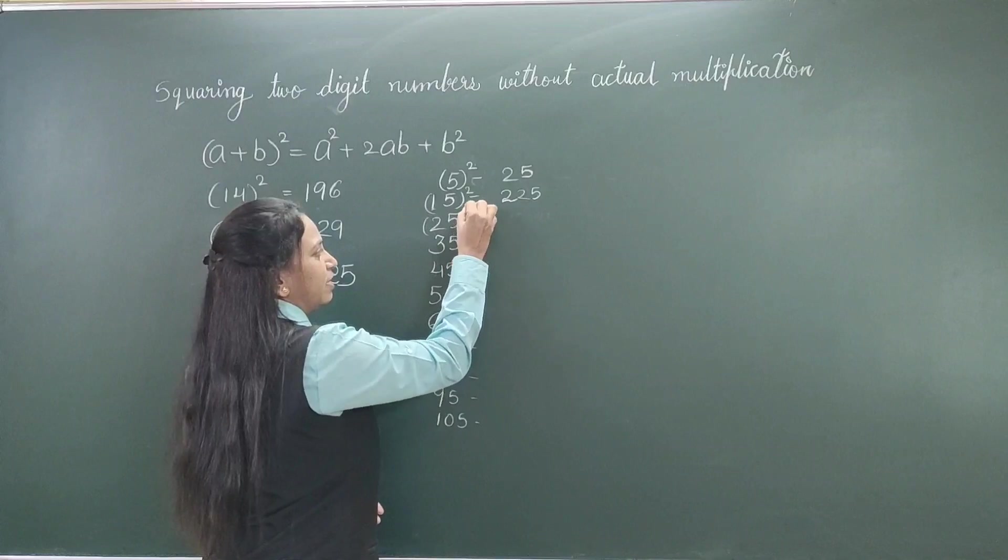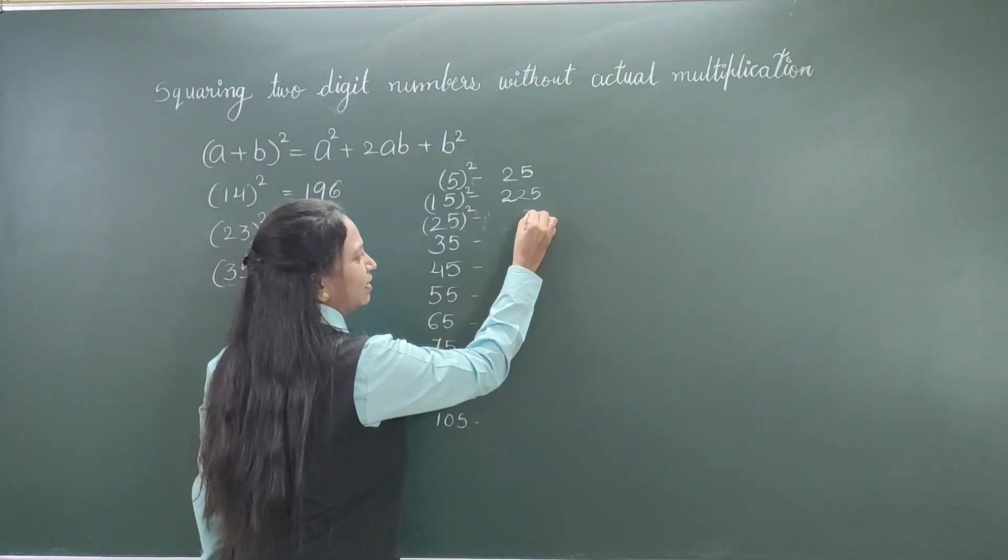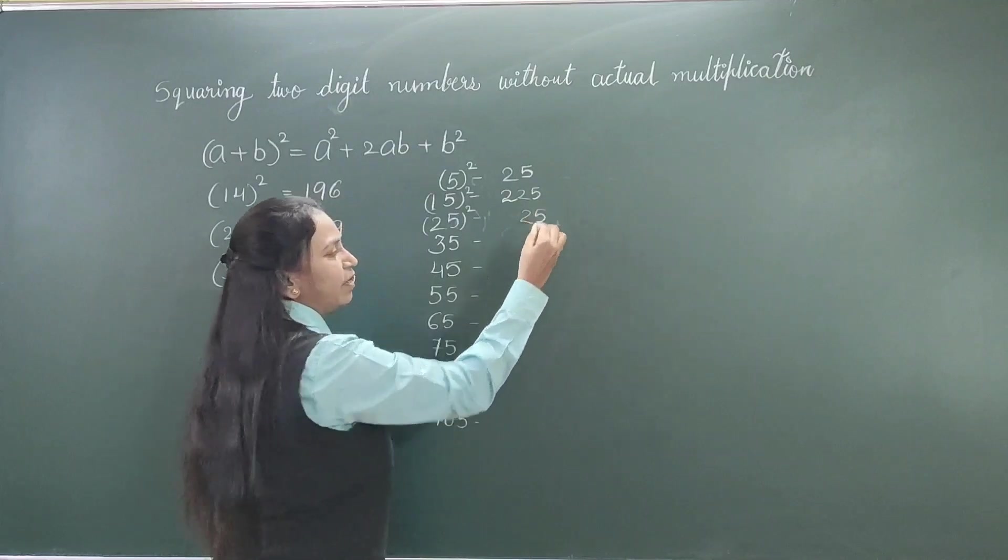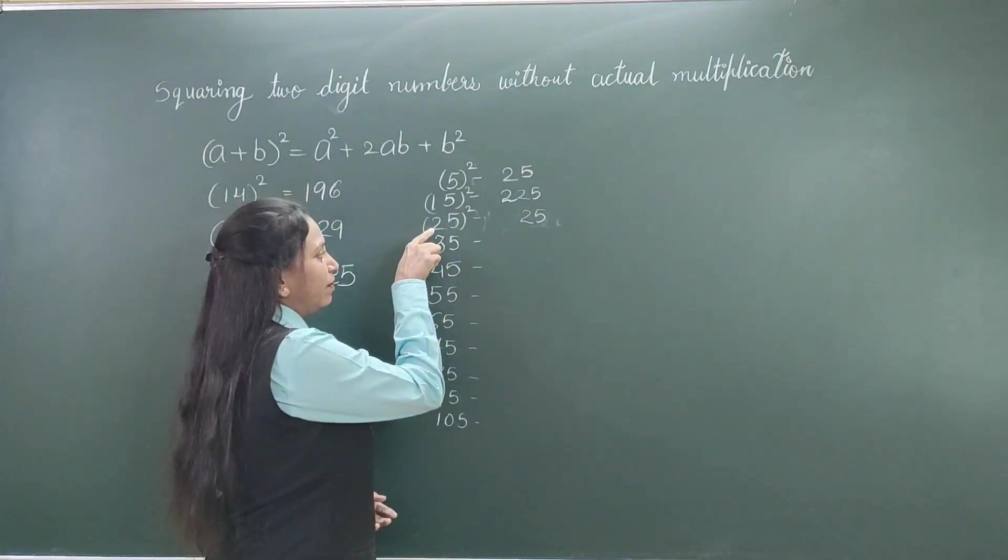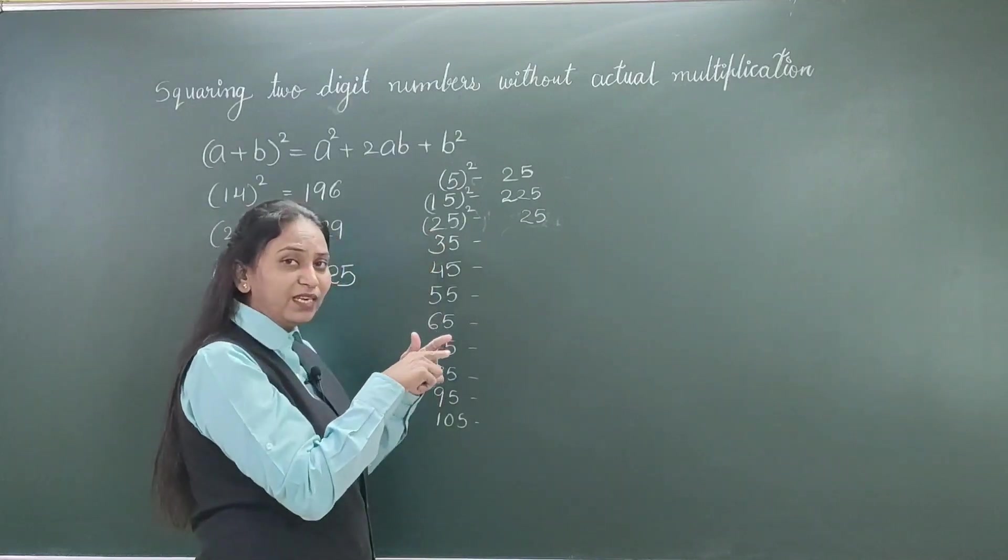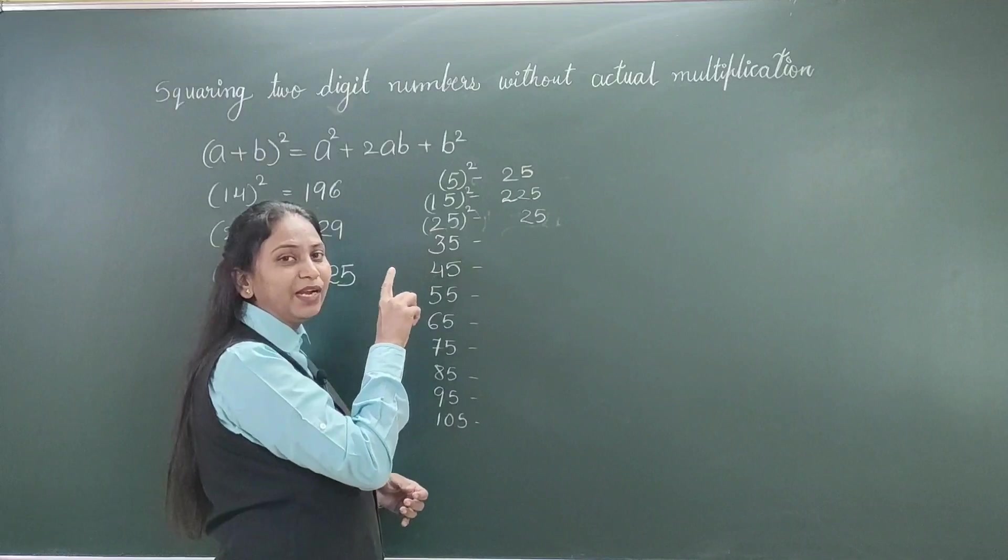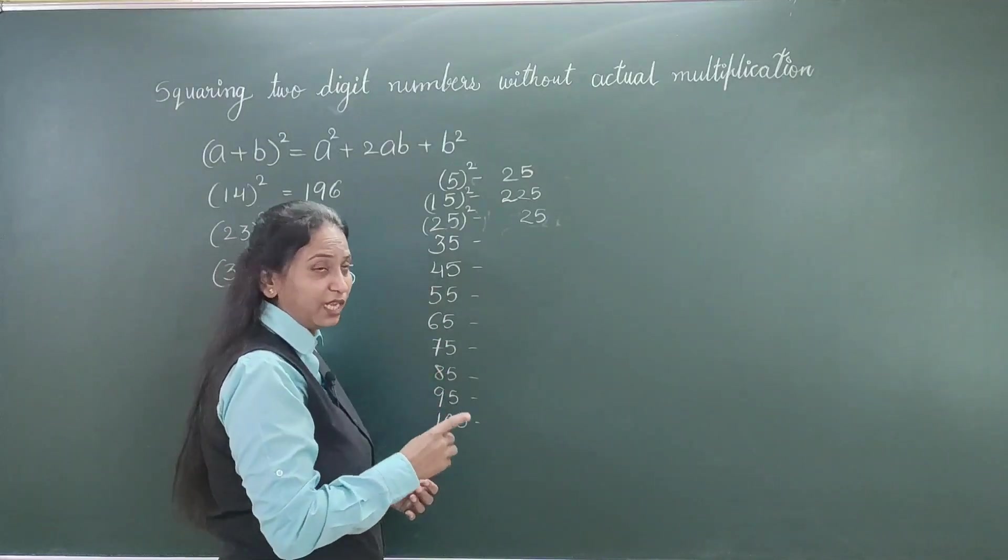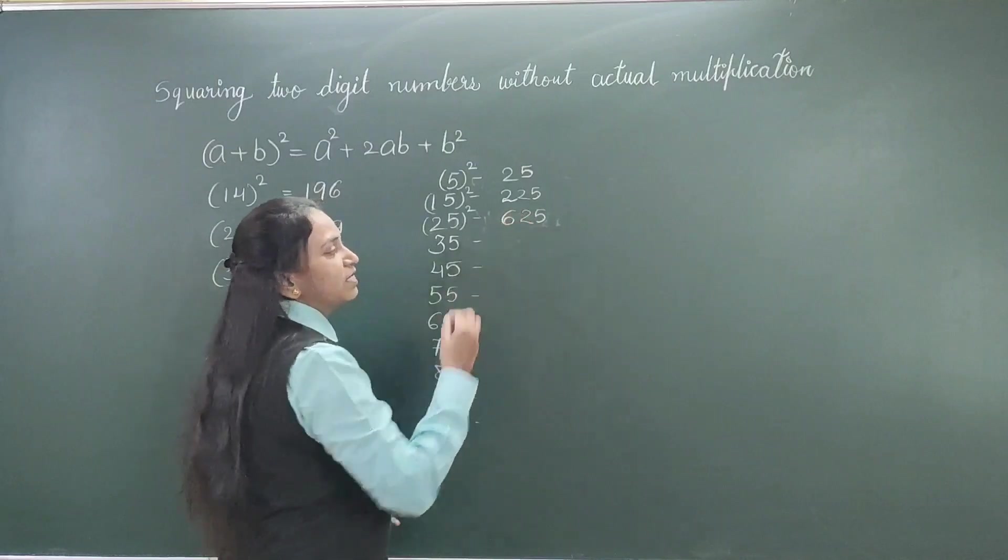In this case, square of 25. As I told you, last 2 digits will be 25 only. What about the previous one? We will multiply this digit with its next natural number. This is 2 and we will multiply 2 with the next number that is 3. So, 2 × 3 = 6. So, this becomes 625.